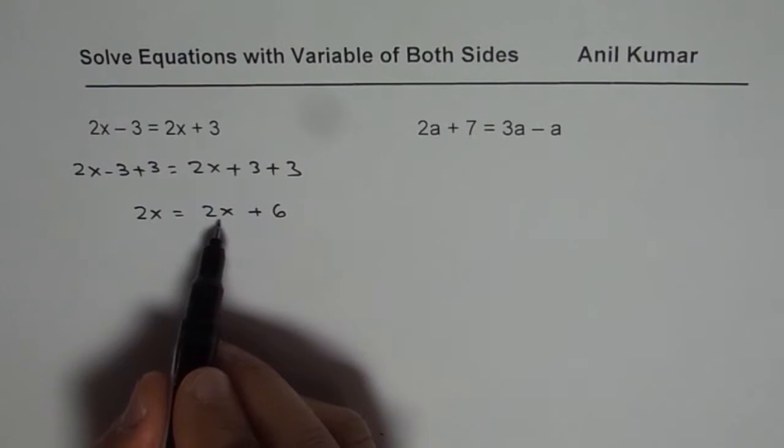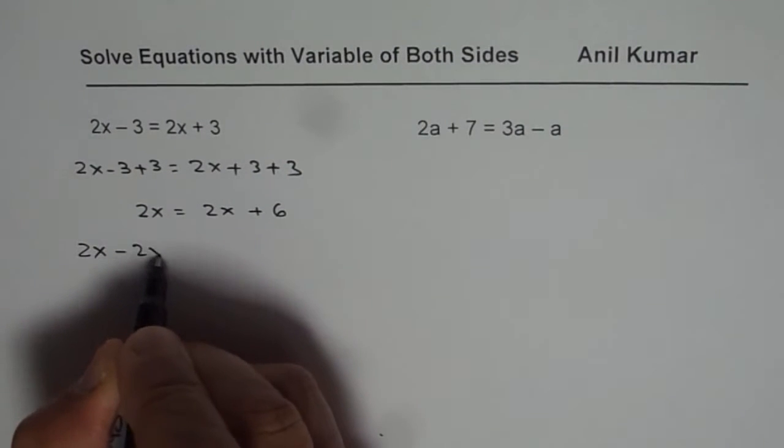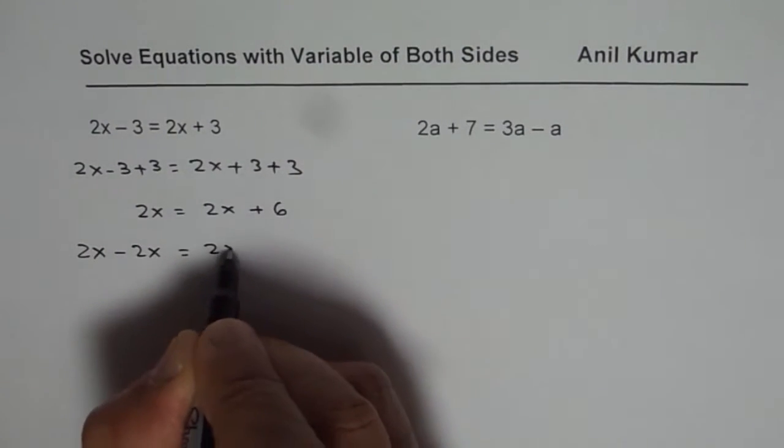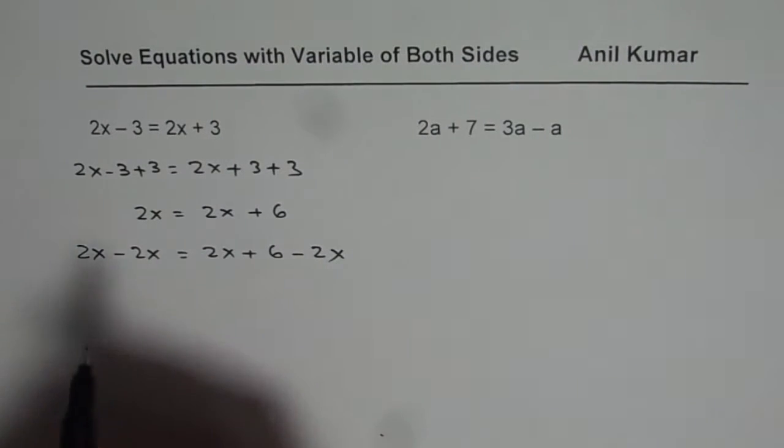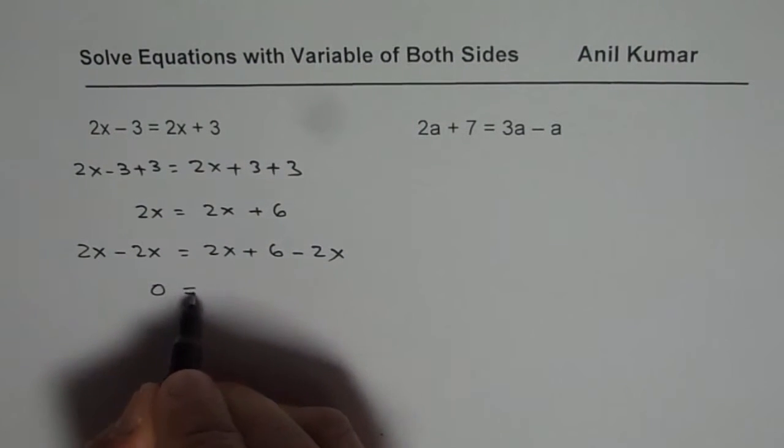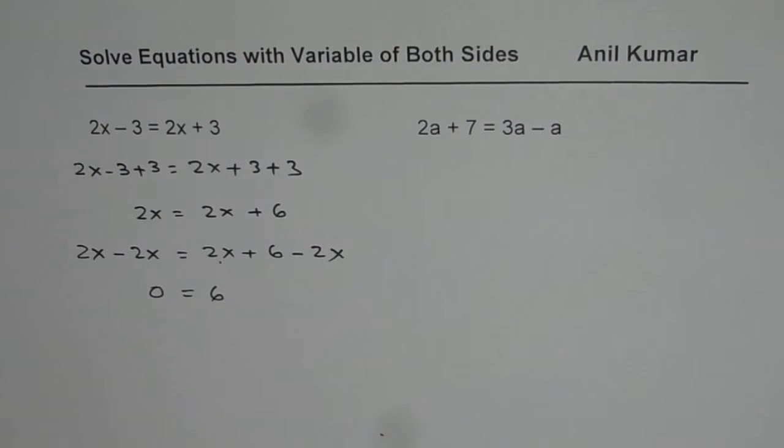Now we will get the variables on the left side. Taking away 2x from both sides will help us do so. So we will do 2x minus on both the sides. So we have 2x plus 6 minus 2x. Now 2x minus 2x is 0 and on the right side 2x minus 2x is 0. We are left with 6. So what we get here is 0 equals to 6.